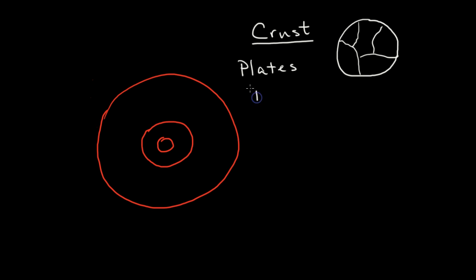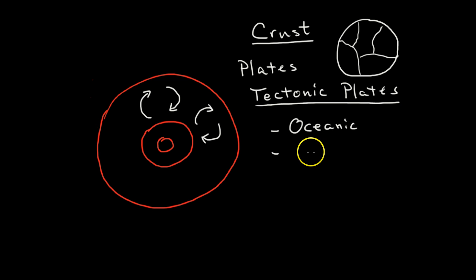And these plates move, and so we call them tectonic plates. All right, and these tectonic plates will move into each other, they'll move away from each other, they'll move side by side each other. And again, the movement of the plates is caused because of the movement of the convection currents of the mantle. All right, and there are two main types of plates. The plate under the ocean is called oceanic plates, and the plate that makes our continents of course is called the continental plates.